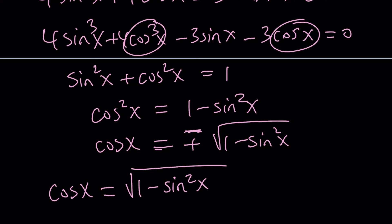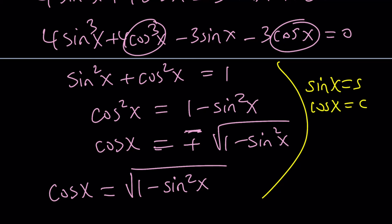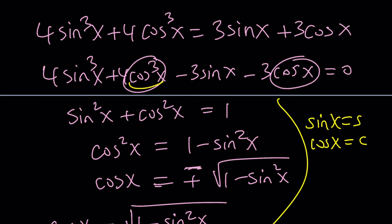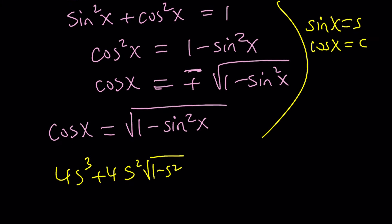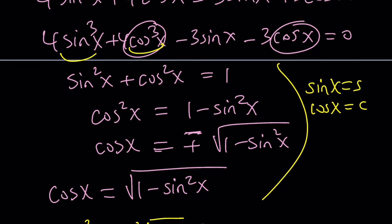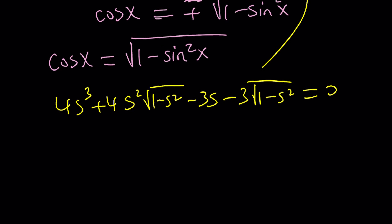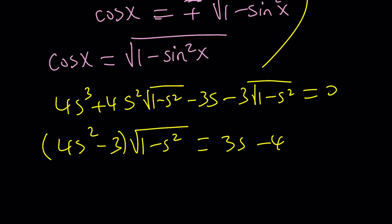Let's see what that looks like. For simplicity, set sine x equal to s and cosine x equal to c. Cosine³x can be written as cosine²x times cosine, which gives us s² times the square root of 1 minus s². So we get 4s² times the square root of 1 minus s² minus 3s, plus or minus 3 times the square root of 1 minus s² equals 0. Collecting the radical terms: (4s² minus 3) times the square root of 1 minus s² equals 3s minus 4s³.